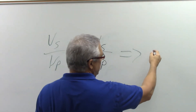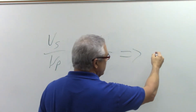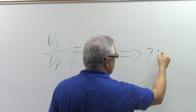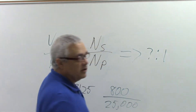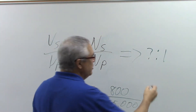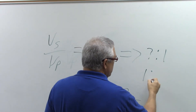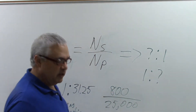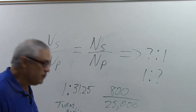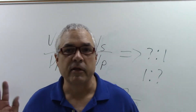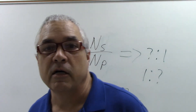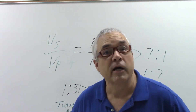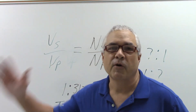Hopefully that's clear and everybody's got a good handle on transformer law. Just remember the equation: VS over VP equals NS over NP, and NS over NP also gives you your turns ratio — some number to 1, or in the case of a step-down transformer, 1 to whatever your computation revealed. Good luck on your registry and I'll see you back here again for more x-ray education. Have a great day!